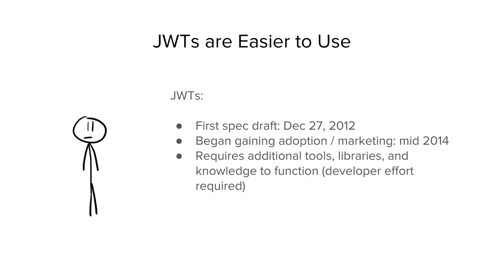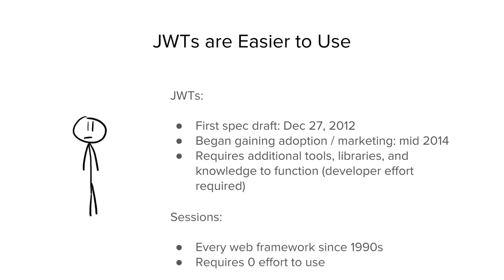JSON Web Tokens, the first specification of this protocol, was created at the very end of 2012. It never really got any usage until mid-2014, when the first blog posts came out and people started using it. If you've ever implemented a site using JSON Web Tokens — and since you're using Node, it's a very common pattern — you know you need a JWT library and a lot of tools to implement them. Sessions, on the other hand, have been built into pretty much every web framework since the 1990s and require zero effort to use.